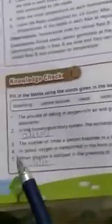Third, the number of times a person breathes in a minute is called the breathing rate. Fourth, in blood, oxygen is transported in the form of a compound called oxyhemoglobin. Fifth, when glucose is oxidized in the presence of oxygen, the products are carbon dioxide and water.